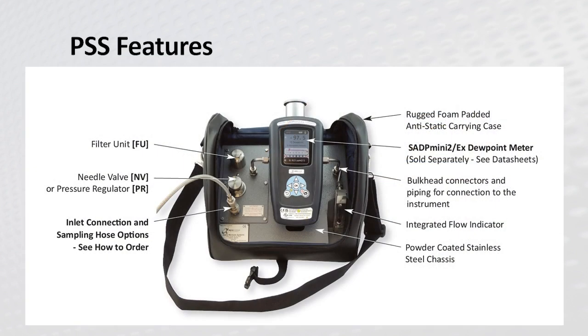Here is a snapshot of a typical arrangement of the PSS sample system showing a filter unit, pressure regulator, up to 200 bar G inlet pressure, quick inlet connect and flow indicator.